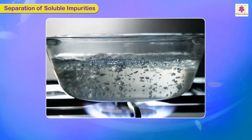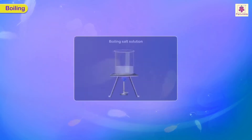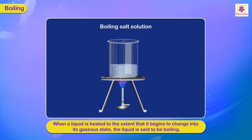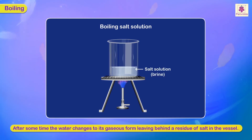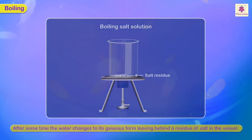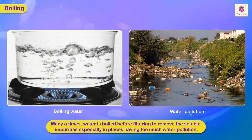Separation of soluble impurities from a solution can be done by boiling. When a liquid is heated to the point that it begins to change into its gaseous state, it is said to be boiling. If a salt solution (also called brine) is boiled, the water changes to its gaseous form, leaving behind a residue of salt in the vessel. Water is often boiled before filtering to remove soluble impurities, especially in places with high water pollution.